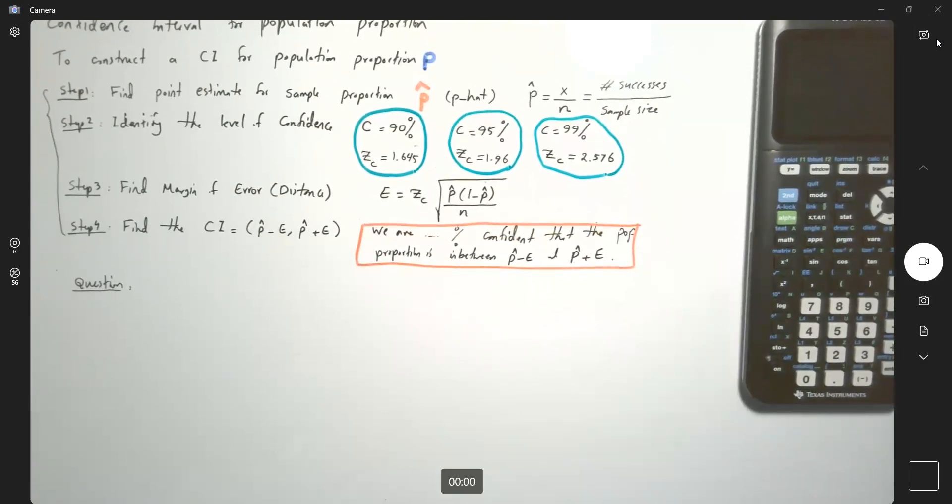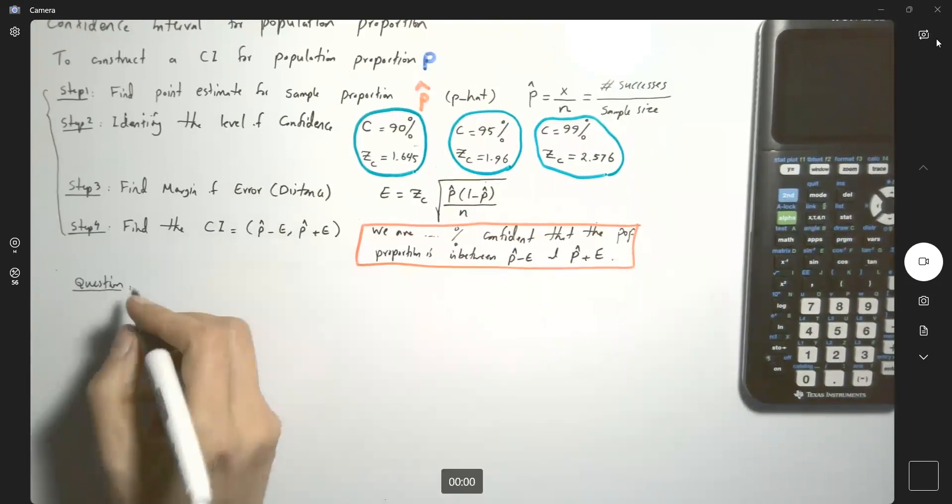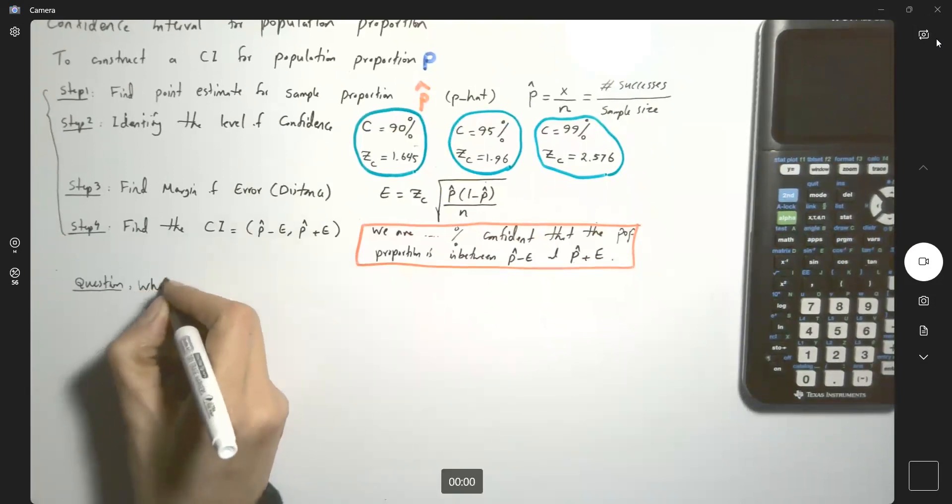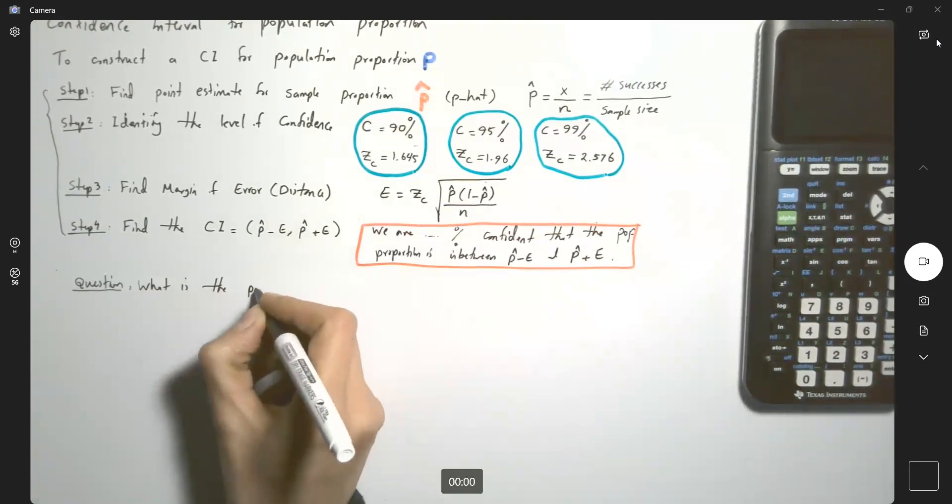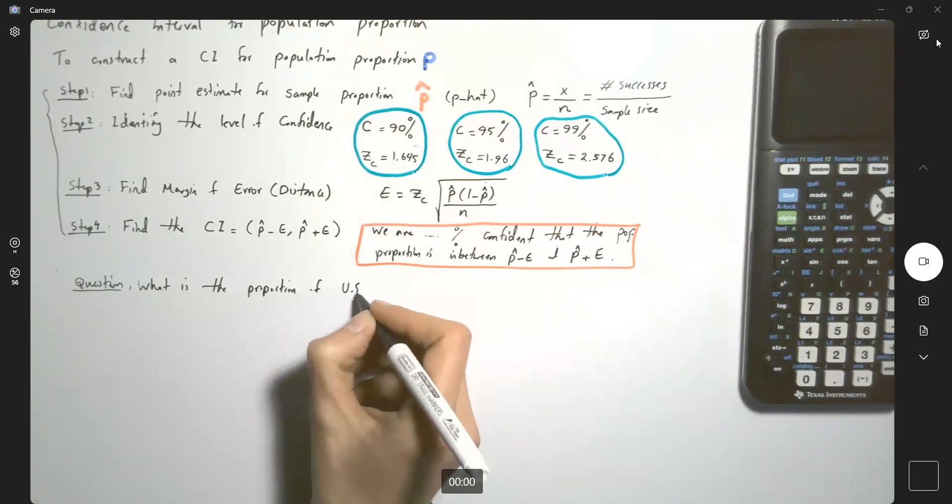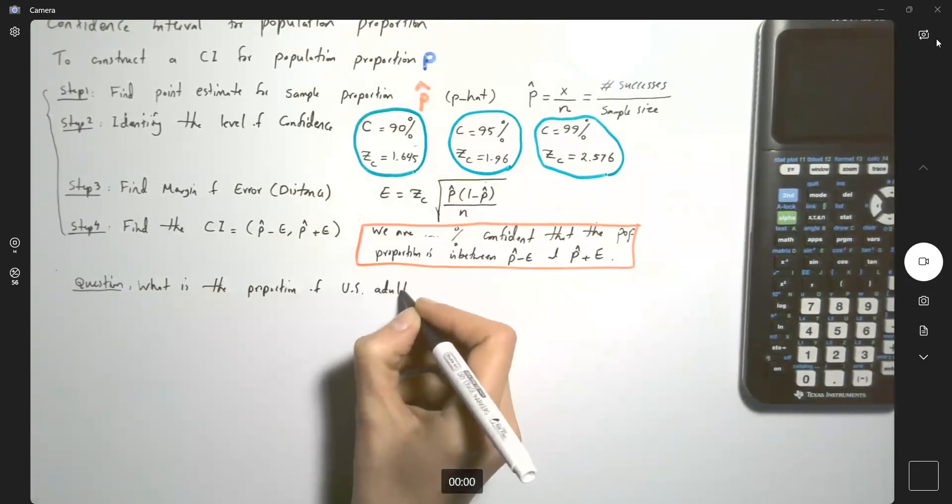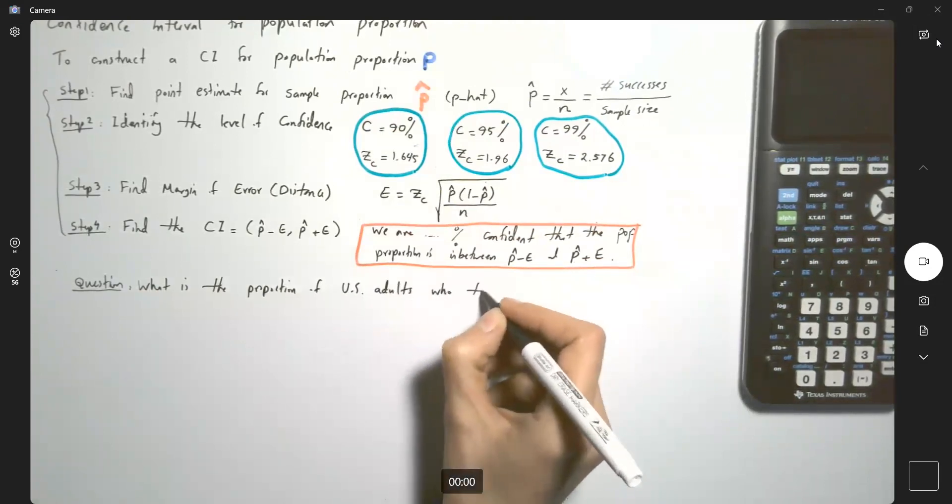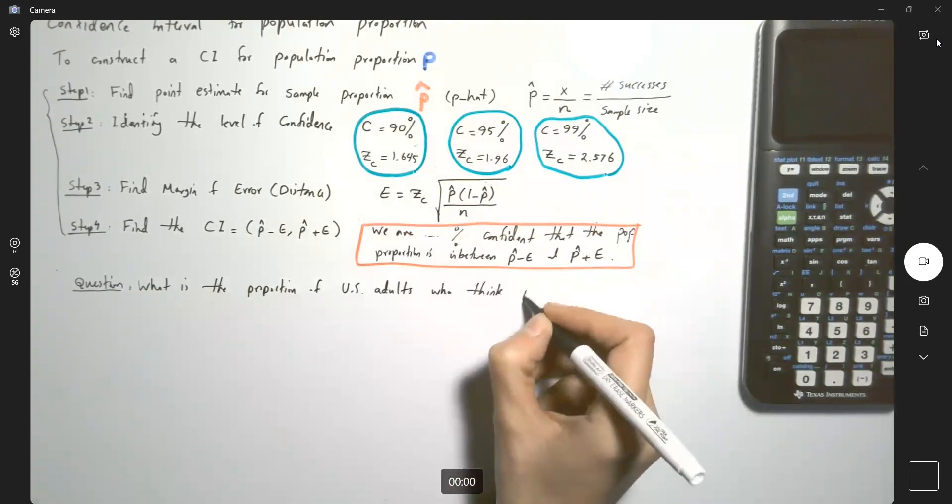I want to know what is the proportion of U.S. adults who think people